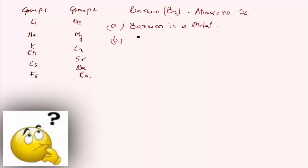The second question: is barium more reactive than calcium or less? When we go down a group of metals, reactivity increases. In group 2, barium is positioned more downward than calcium, so barium is more reactive than calcium.